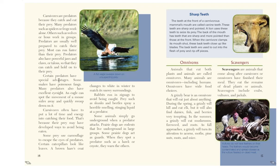Certain predators have special advantages. Some snakes have poisonous fangs. Many predators also have excellent eyesight — an eagle can spot the movement of a moose miles away and quickly swoop down onto it. Carnivores often have to put a lot of time and energy into catching their food because their prey may have developed ways to avoid being eaten. Some prey use camouflage; certain caterpillars look like leaves, and a brown hare's coat changes to white in winter to match its snowy surroundings.